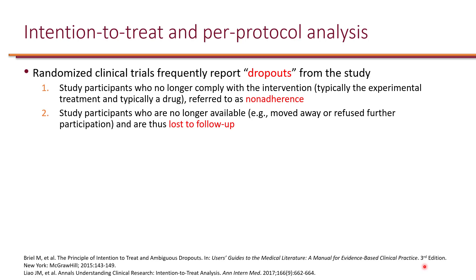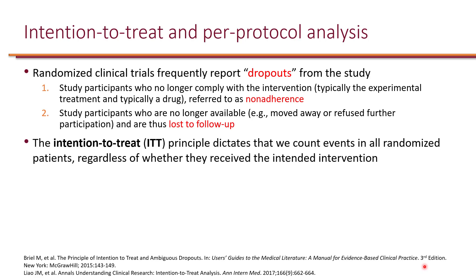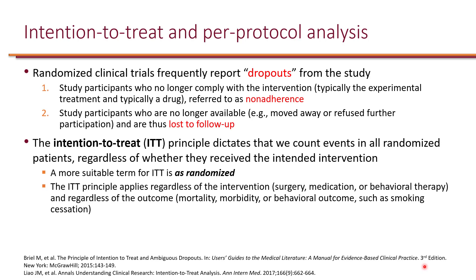The intention-to-treat principle essentially says that in the final analysis of the study, you have to count every patient who was randomized regardless of whether they received the intended intervention. Many experts argue that a more suitable term for intention-to-treat is 'as randomized.'